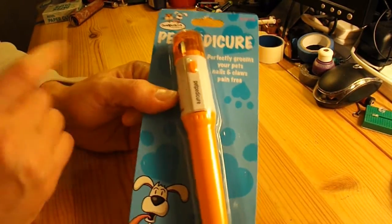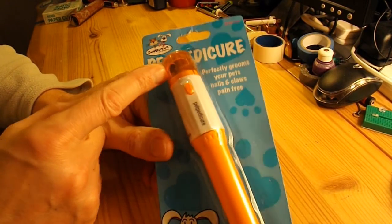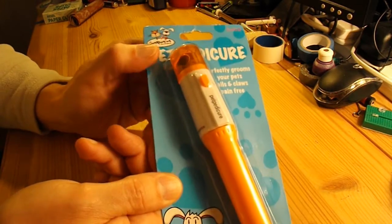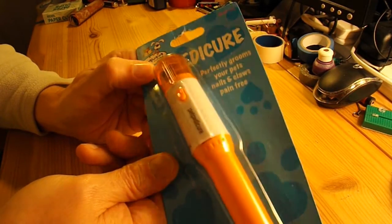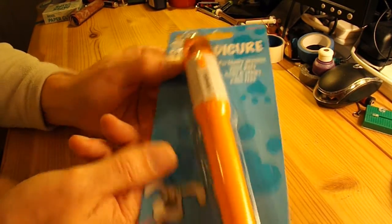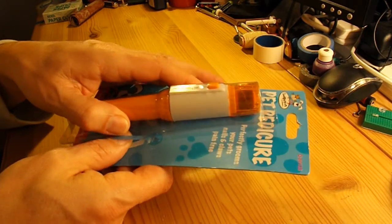Basically all it is is an electric motor with a grinding wheel on the end for tidying up your pet's nails - dogs and cats I assume, for grinding them down. So obviously I picked it up because it's got an electric motor in it.